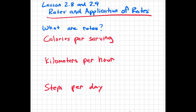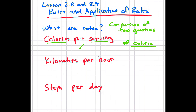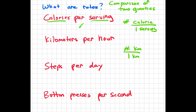So what are rates? Rates are a comparison of two quantities. In this case, the first example, we have calories per serving. The two quantities are calories and serving. So what we're looking for is the number of calories per one serving. We always want to get it down to one serving, or in the second example, the number of kilometers per one kilometer. We usually don't write down the one in front because it's just understood that it is one kilometer.